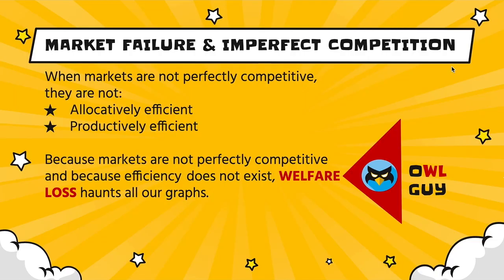As stated in the beginning, this is a topic that flows naturally from market failure. Whenever markets are not perfectly competitive and imperfect competition exists, we then have markets that are not allocatively or productively efficient, which if we had a graph here of producer surplus and consumer surplus, we would definitely be demonstrating where the welfare loss would arise.